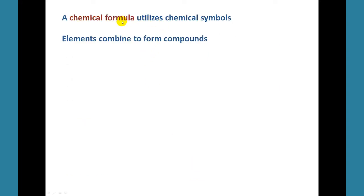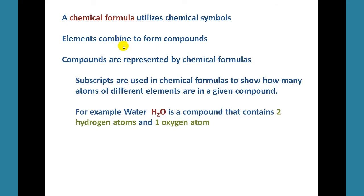A chemical formula utilizes chemical symbols — elements combine to form compounds. We represent compounds by chemical formulas. We use subscripts in chemical formulas to show how many atoms of different elements are in a given compound. Let's take water for an example. The chemical formula for water shows that there are two hydrogen atoms and one oxygen atom. Note that a subscript of one is not shown.